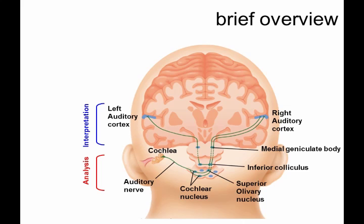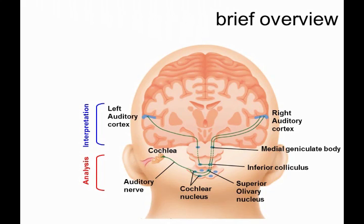Here's a brief overview. This week and next week we'll follow the afferent auditory pathway, which goes from the cochlea via the auditory nerve into the cochlear nuclei, then the superior olivary complexes, inferior colliculus, medial geniculate body, and finally left and right auditory cortex. Don't worry about the details yet — we'll cover them in more detail later. This rough schematic says: what happens in the brainstem is analysis, and what happens in the cortex is interpretation.